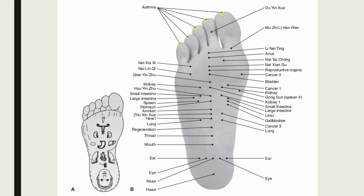The asthma point is located at the center of the tip of each toe on the plantar surface. Indications include numbness of the foot, renal syndrome, and asthma. Xu Xin Shui is located at the center of the plantar surface of the foot on the midline, 5 units from the heel. Indications include cyclasthenia and schizophrenia.